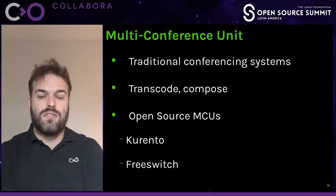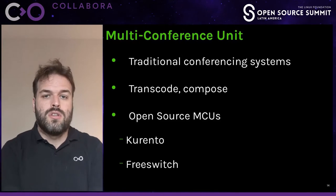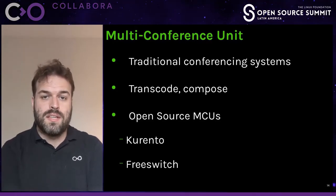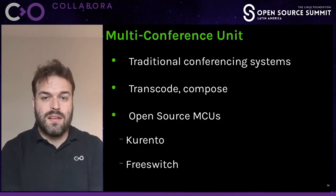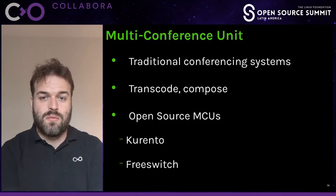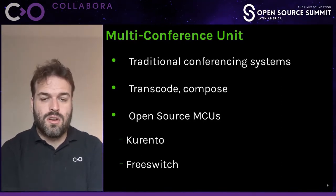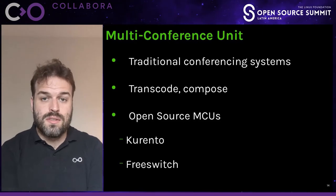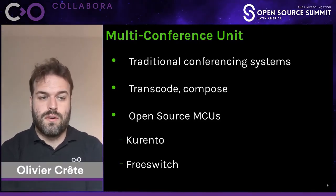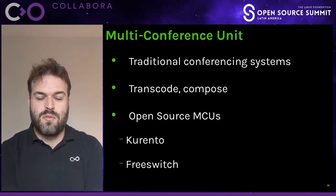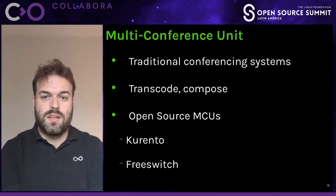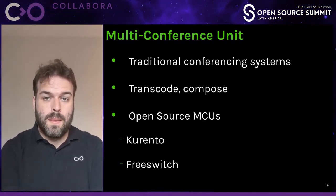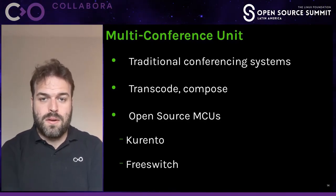Then there's something called a Multi-Conference Unit (MCU), which is the more traditional video conferencing system. An MCU receives the video, decodes it, and can compose it — for example creating a mosaic into a single image — and then sends a single stream to each client. The disadvantage of an SFU is that if you have multiple streams you want to see, you receive and decode them all separately on the client, requiring more resources. With an MCU, those resources move to the server, which does the transcoding. The most popular open source one is probably FreeSwitch, which is generally used as a telephony server but can also do video. There's also Kurento, a Java-based framework to build media processing applications, in particular WebRTC and MCUs.